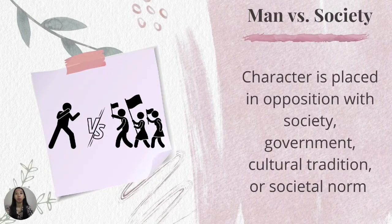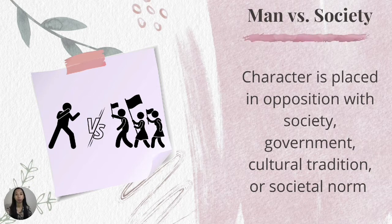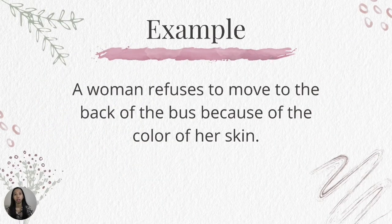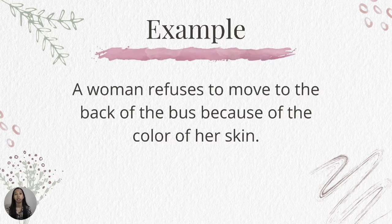Lastly, we have man versus society. The character is placed in opposition with society, government, cultural tradition, or societal norms. Characters often fight against social perception, and their struggles could include the fight for freedom, against racism, for progress, or for change. For example, a woman refuses to move to the back of the bus because of the color of her skin. The conflict is that she struggles against racism.